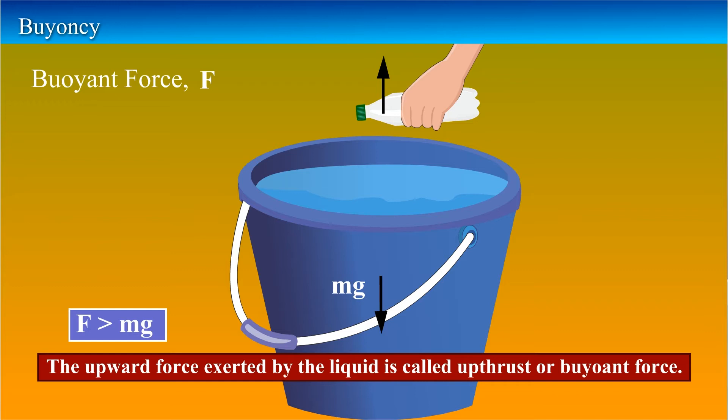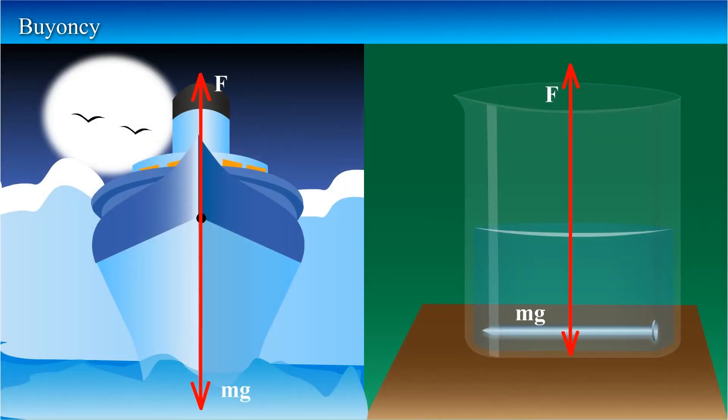That means in order to immerse the bottle completely into water, we need to apply more force than the upward buoyant force. Yes, exactly. The ship floats in the water because the buoyant force exerted by the water on the ship is greater than its weight. In case of a nail, the buoyant force exerted is very less, hence it sinks in the water.